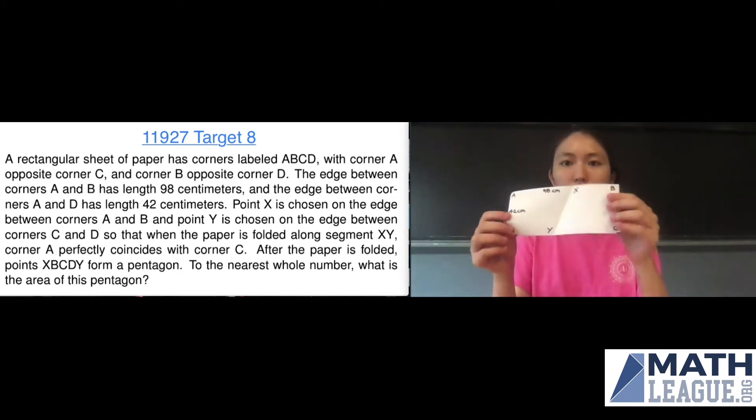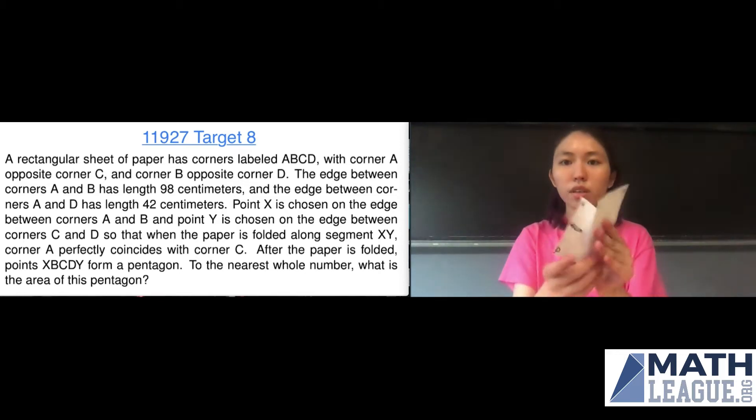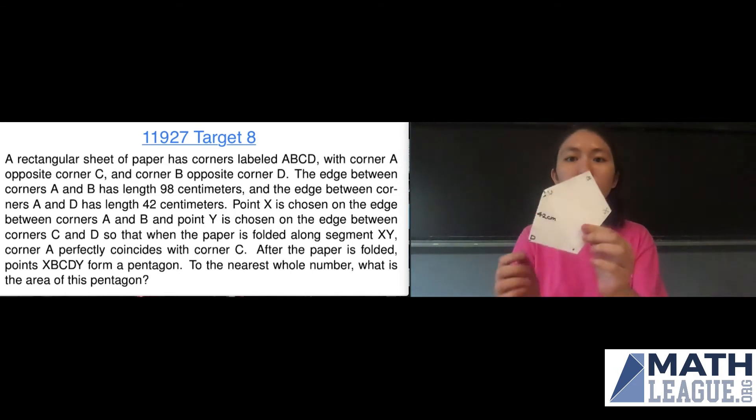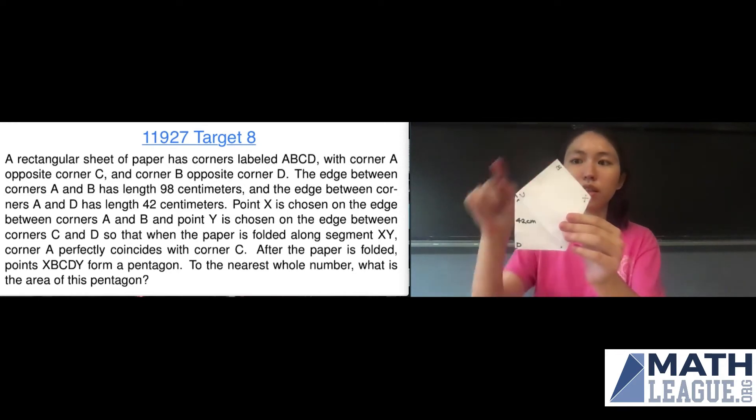Let's take a moment to label that. So now we can see we have our points A, B, C, D. We have X in between A and B and Y in between C and D. So after the paper is folded, points X, B, C, D, and Y form a pentagon. So there's X, B, C, D, and Y. This is our pentagon.